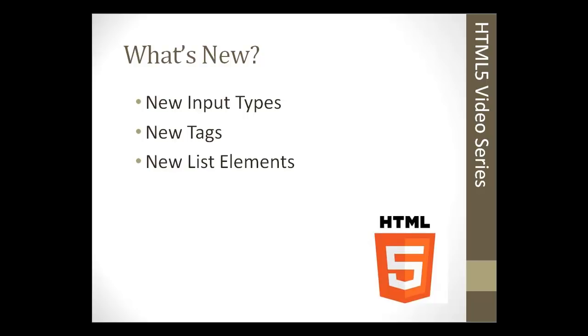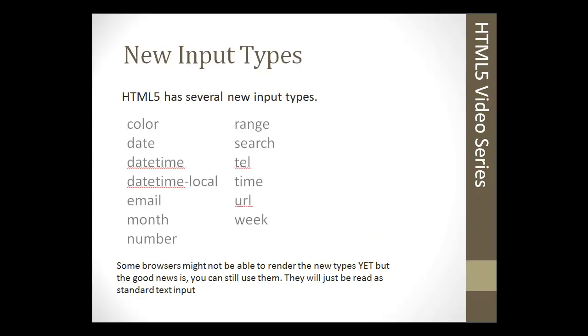We also have new tags and new list elements. There's quite a few new input types. Before in HTML4, all we had was the input text, password, checkbox, radio, and a couple others. But now we have color, range, search, date, different date pickers, email, and URL. I'm going to go through these real quick in this slideshow, and then the second part of the section will actually put this to work in our project.